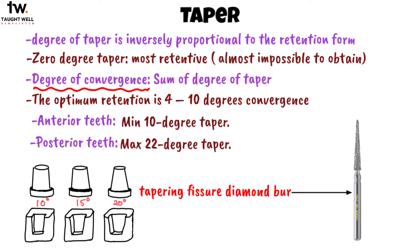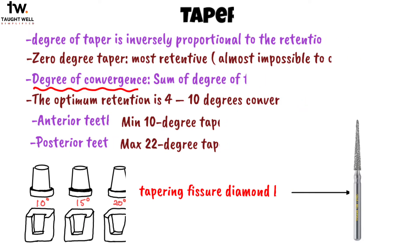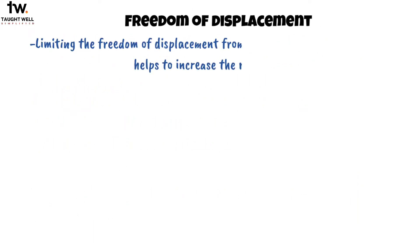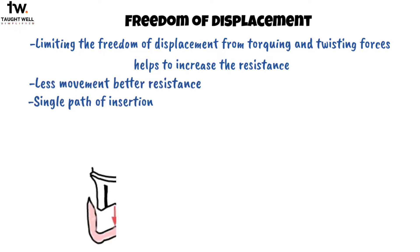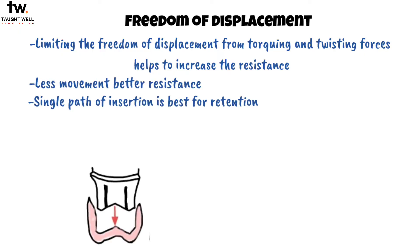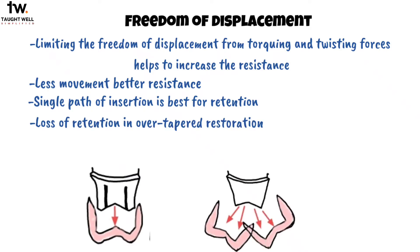A tapering fissure diamond bur is ideal to produce a taper. Limiting the freedom of displacement from tilting and twisting forces helps to increase the resistance; in other words, less movement means better resistance. A single path of insertion is best for retention. There will be a loss of retention in overtapered restorations because in such cases there are multiple paths of removal. So, the greater the taper, the lesser the retention.